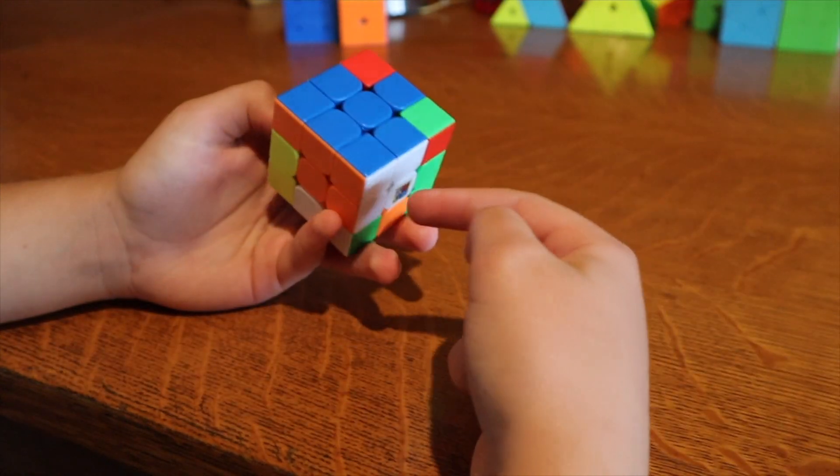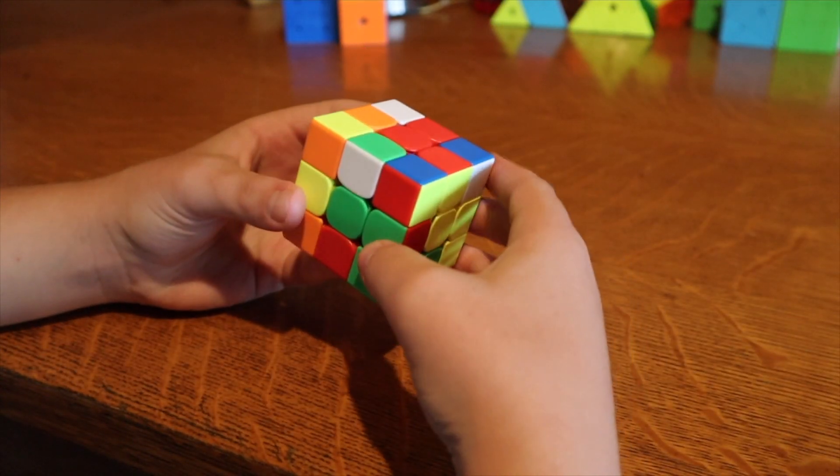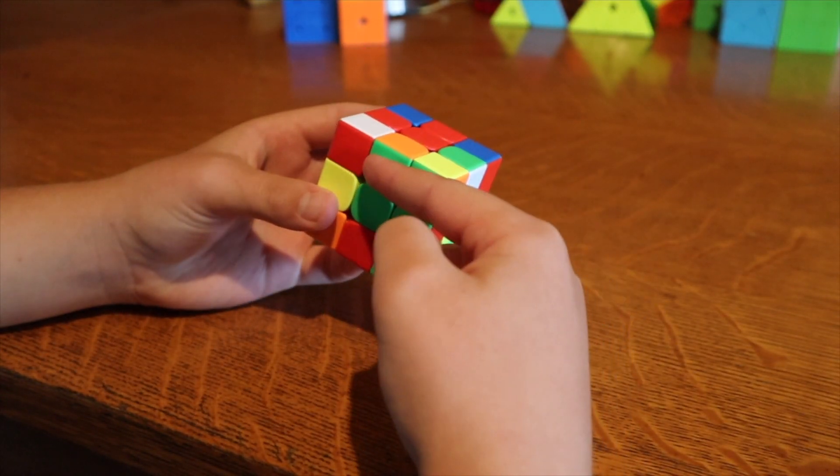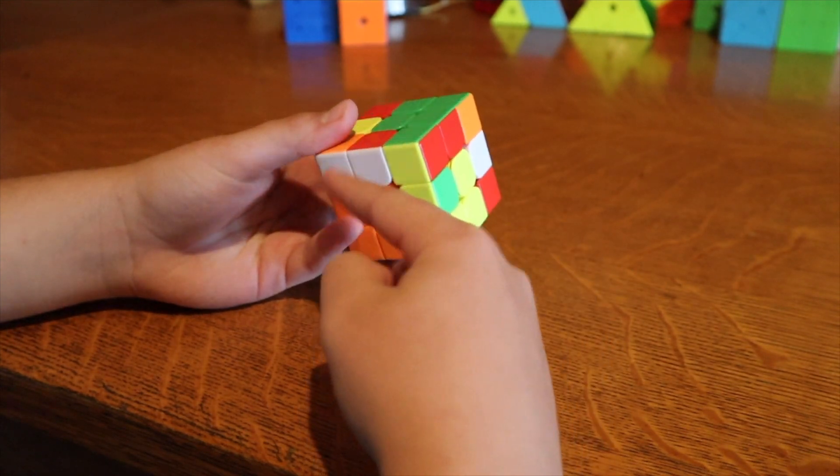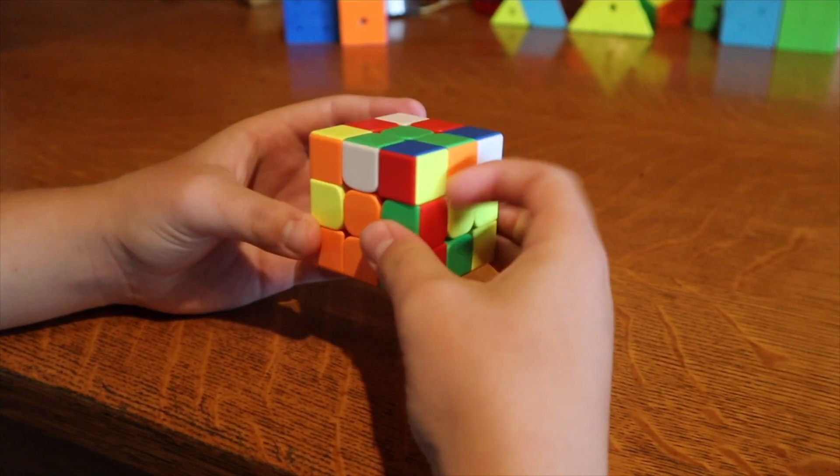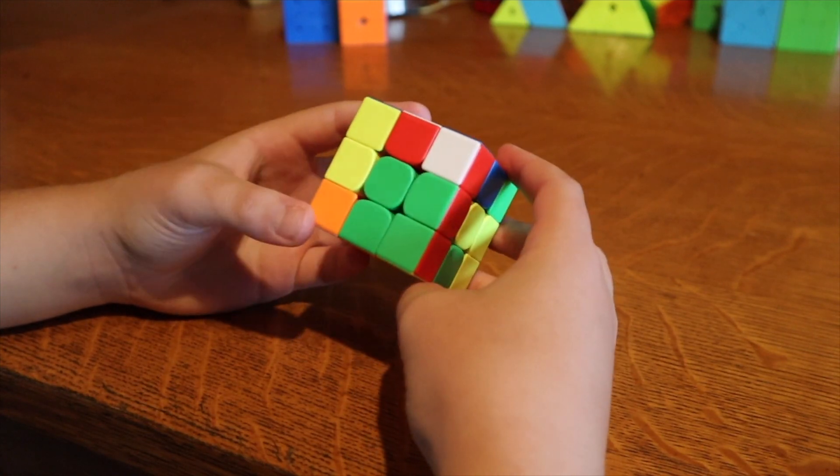So after I made this I did a rotation and I saw this was the orange and green cross piece that goes right here. So I inserted it like this for some reason, I don't know why but I did.